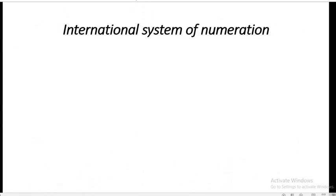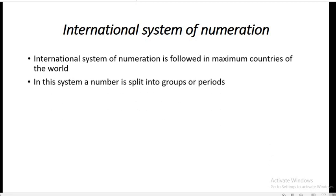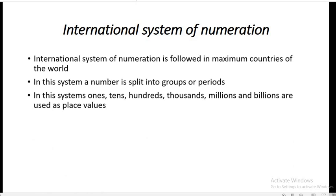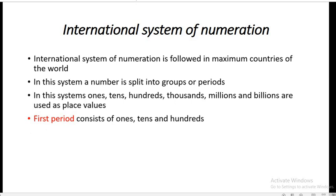Let us discuss what is the international system of numeration. This system of numeration is followed in maximum countries of the world. In this system, a number is split into groups or periods. The periods are: ones, tens, hundreds form one period; then thousands, millions, and billions are used as place values.